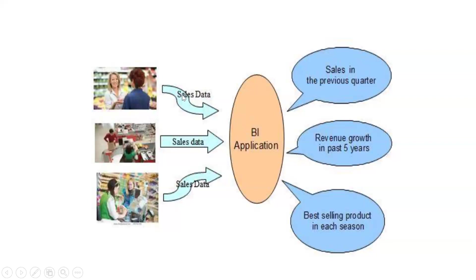Sales data from different outlets — those are the different outlets actually — is collected and everything is processed by a BI application. After processing, charts and graphs are prepared on top of the data. Users can find important aspects like sales in the previous quarter, revenue growth, and the particular revenues for the last five years. They can read the slope and identify what the next revenue should be — they can forecast something.